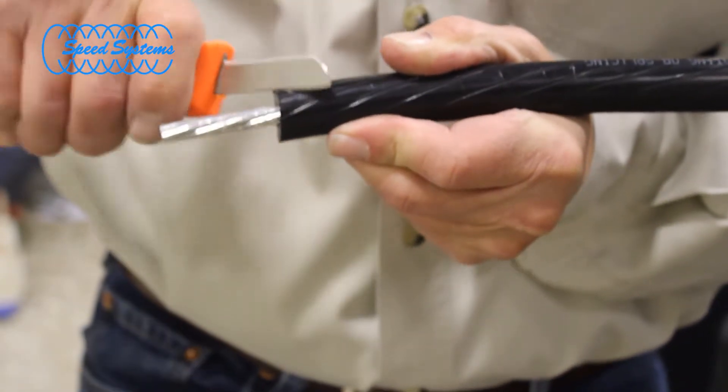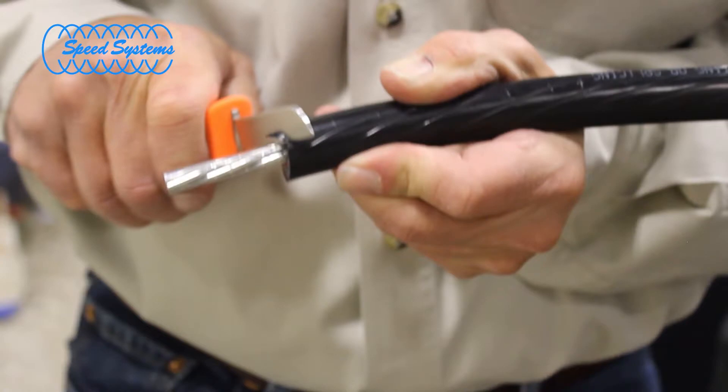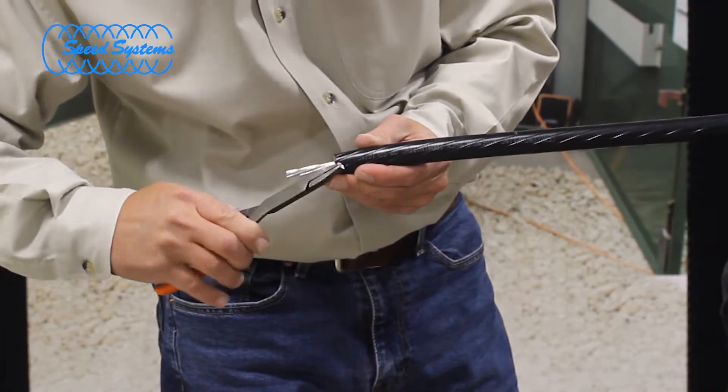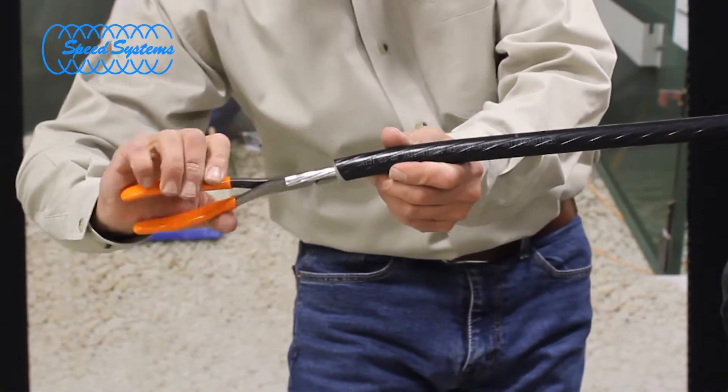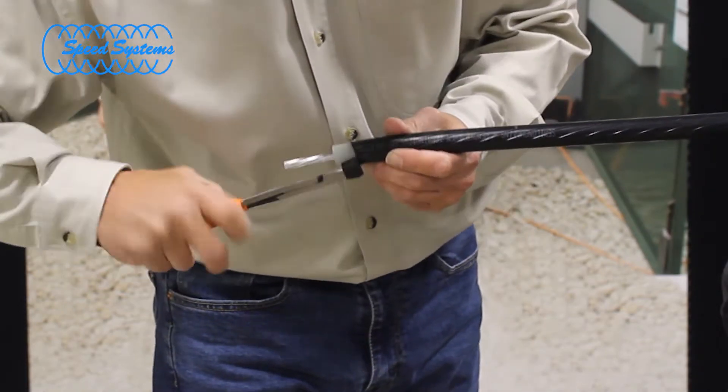Use a knife such as the Speed Systems SC11 edge wedge to lift the edge of the SEMICON so you can grab it with pliers such as the Speed Systems SC13 SEMICON roller grip. Use the SEMICON roller grip to roll the SEMICON from the insulation until you reach the square cut.